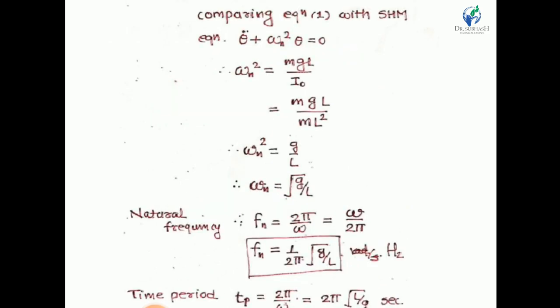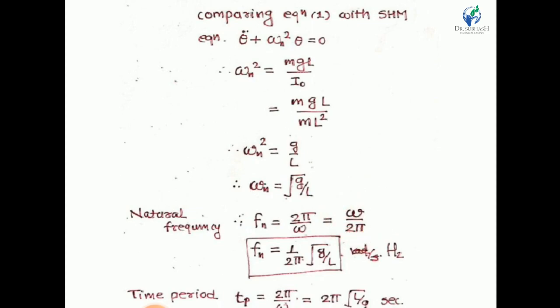Comparing this equation with the simple harmonic motion equation θ̈ + ωn²·θ = 0, we obtain ωn² = mgL/IO, and therefore ωn = √(g/L). The natural frequency is fn = ωn/(2π) = 1/(2π)·√(g/L) in Hertz. Similarly, the time period is T = 2π/ωn = 2π·√(L/g) in seconds. Thank you.